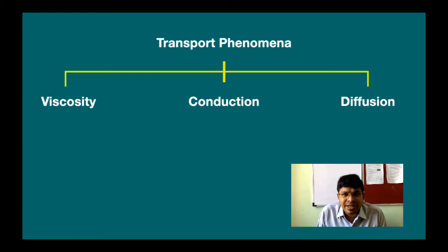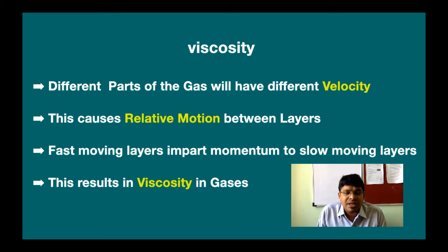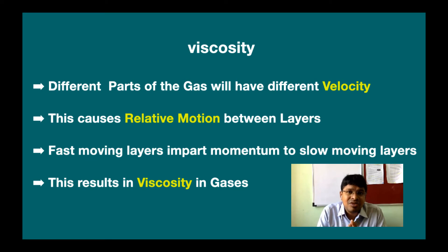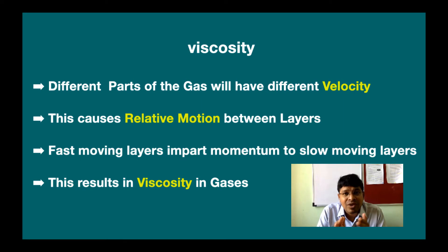If you take viscosity, the different parts of the container will have different velocities. This causes relative motion between the layers, so the transportation of momentum happens from the fast-moving layers to the slow-moving layers.